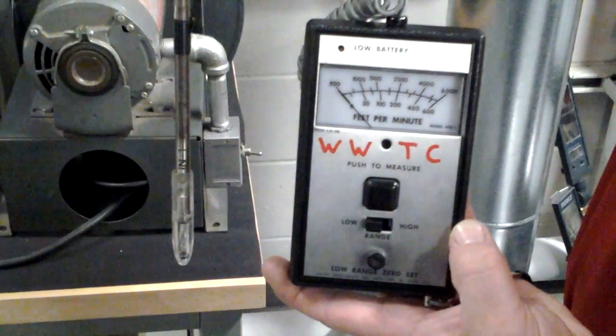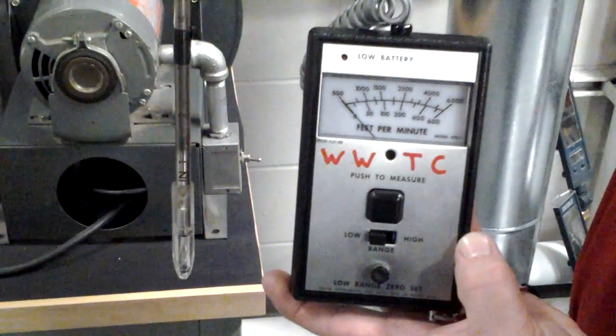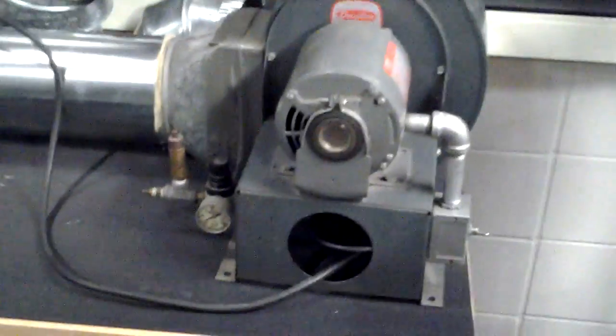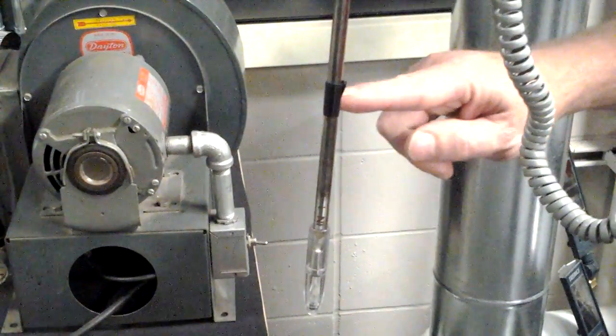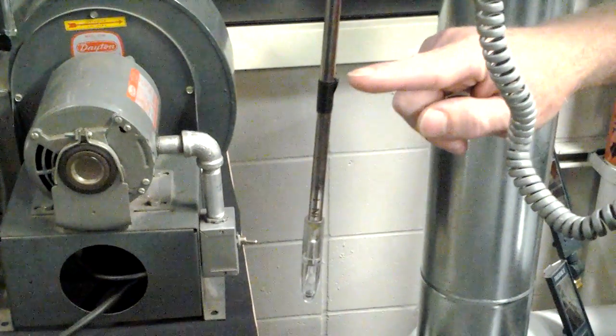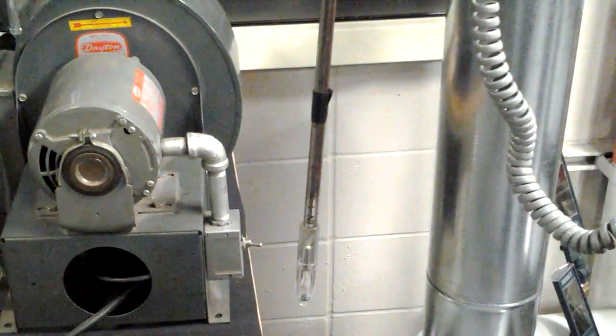We will be demonstrating how to use this by using a direct drive blower and 15 feet of 6 inch round duct to simulate a branch in your residence. Let's begin by putting a piece of electrical tape at the 3 inch mark on the anemometer probe, because it will center the probe in the duct.